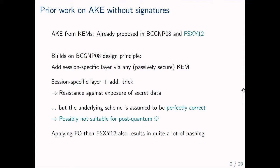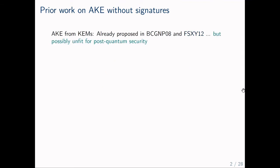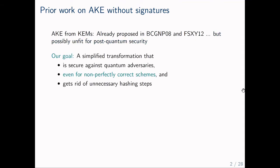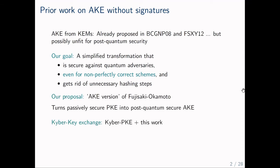Another minor issue is that the Fujisaki-Okamoto transform already involves hashing the key, and the construction by Fuyuka et al. involves potentially redundant hashing of the already-hashed session. In conclusion, there were no known KEM-to-key-exchange constructions with guaranteed post-quantum security in the presence of potential decryption failure. Hence, the goal of our work was to give a simplified transformation that is secure against quantum adversaries even if the underlying scheme is not perfectly correct, that also eliminates unnecessary hashing steps. We achieved this by lifting the Fujisaki-Okamoto transformation to the AKE setting, and an example application is the Kyber key exchange.